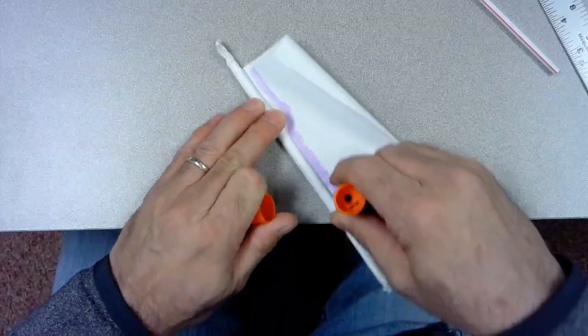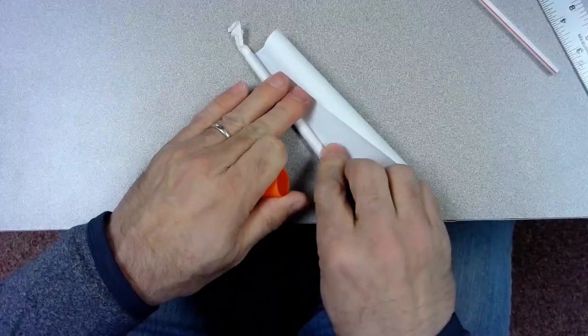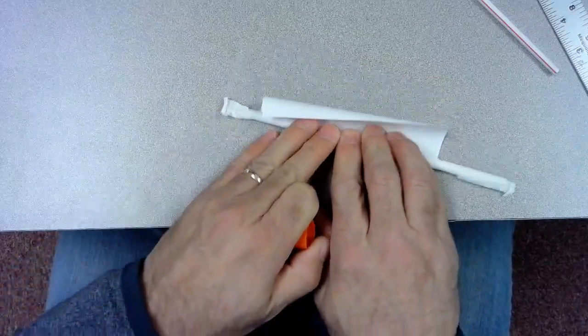So if I'm using tack or glue stick, I can just put one stripe of glue there and that helps hold the middle part together while I'm rolling it.